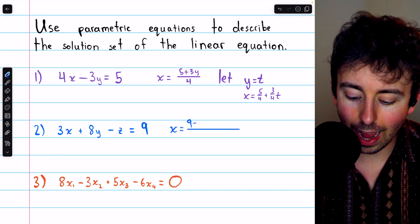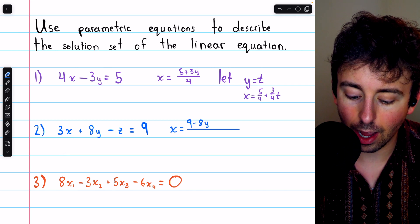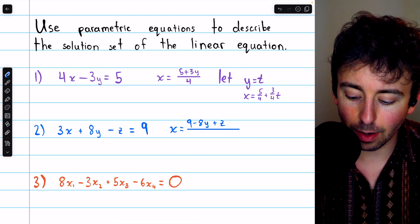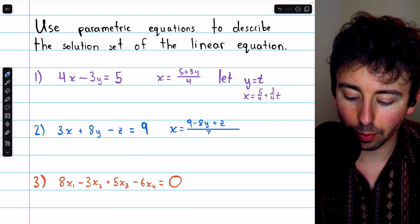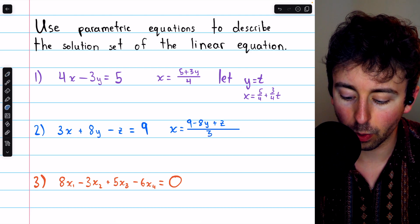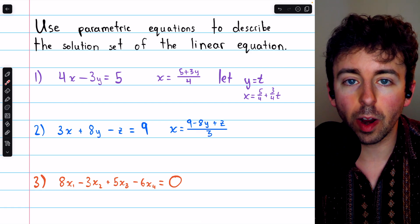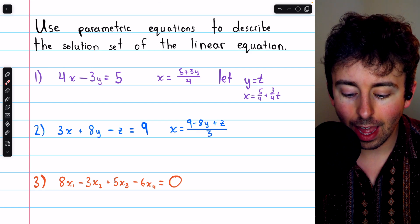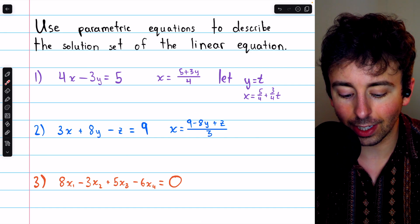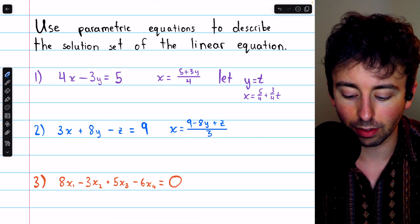We would subtract 8y from both sides, so 9 minus 8y. And then we would add z to both sides, and then we would divide everything by 3. So there is our equation. In this case, y and z are both free variables. They can be whatever they like, and x can be calculated accordingly to get a solution to this equation.